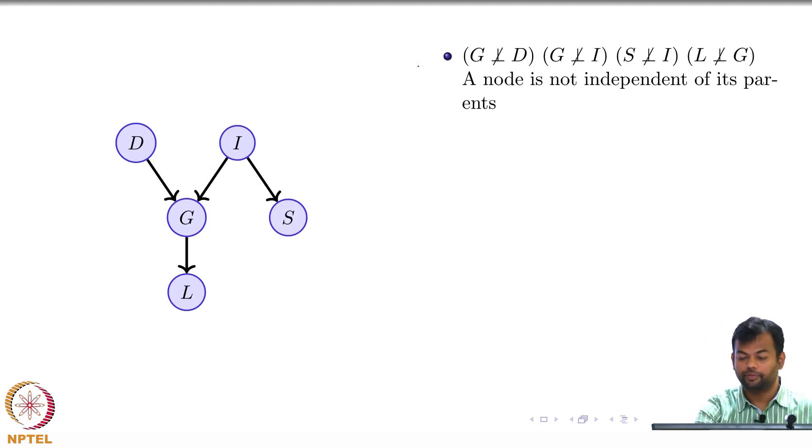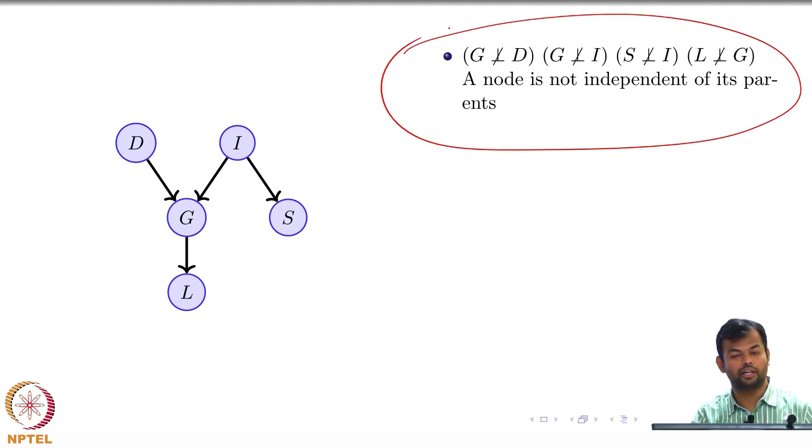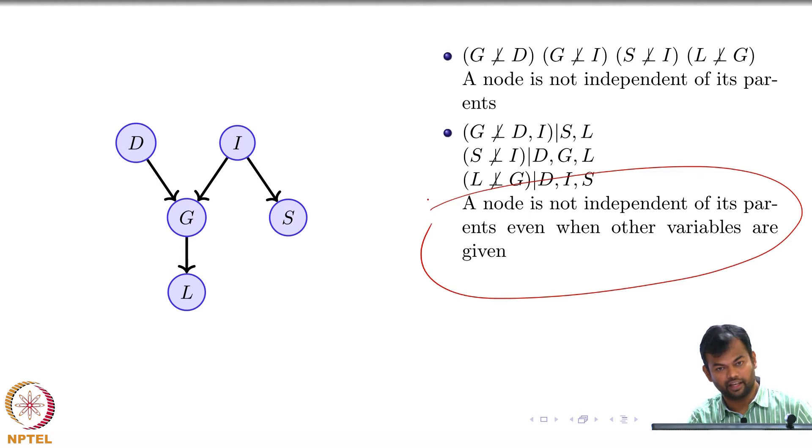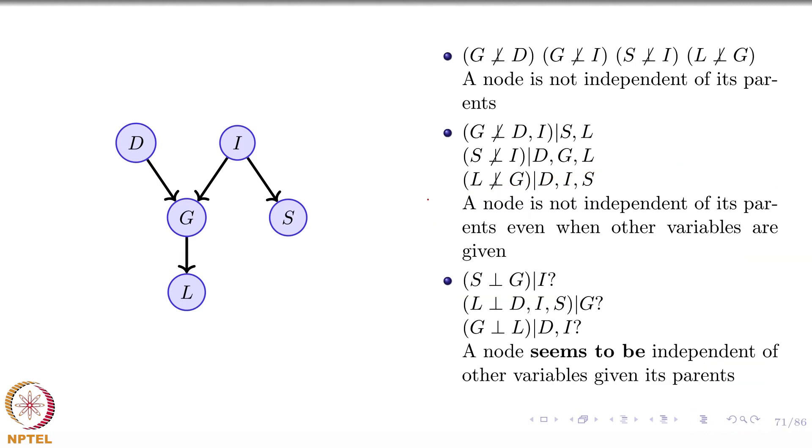This is the first rule that we had: a node is not independent of its parents. The second rule: a node is not independent of its parents even when other variables are given. The third rule: a node seems to be independent of other variables given its parents. This is the giveaway, and that's what we need to fix.